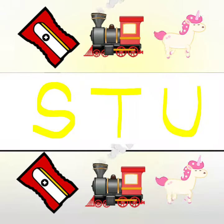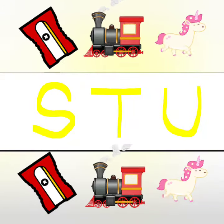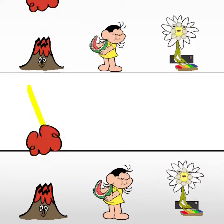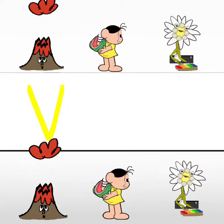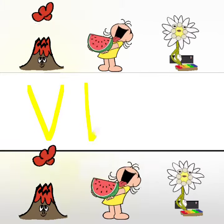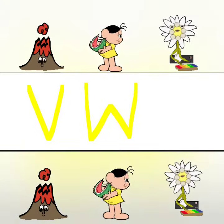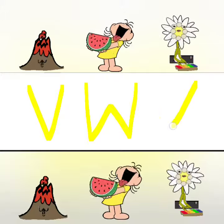U for Unicorn, V for Volcano, W for Watermelon.